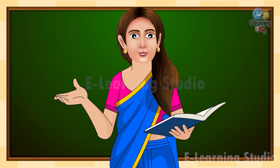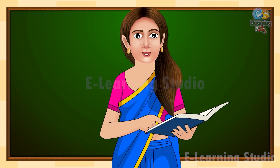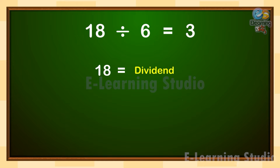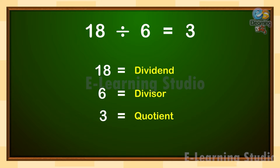Let us understand with the help of another example. 18 divided by 6 means 18 shared into 6 equal groups, which would be 3. In a division, the first number is called the dividend, the second number is called the divisor, and the answer is called the quotient. So in this example, 18 is the dividend, 6 is the divisor, and 3 is the quotient.